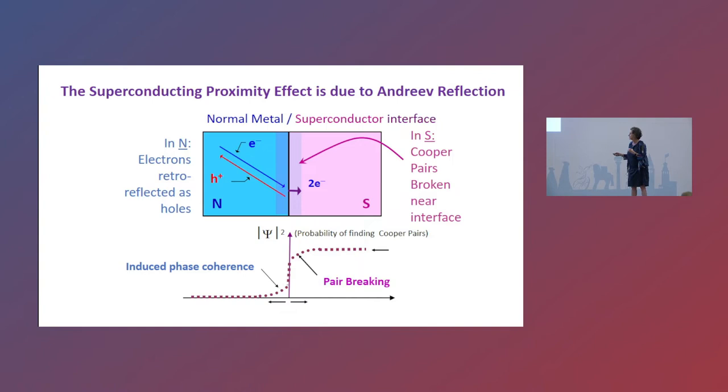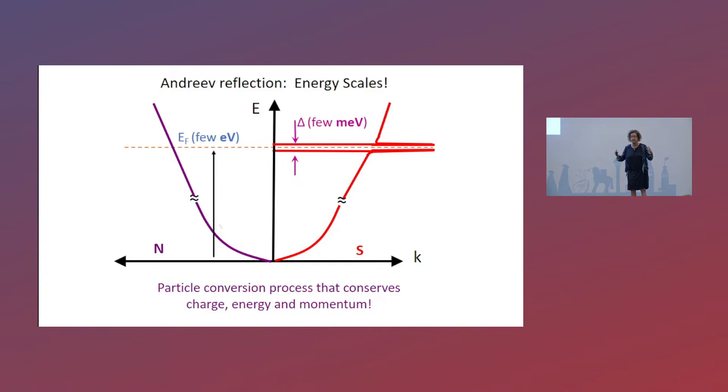If that sounds fantastic, this next slide shows that when you think of Andreev reflection, you have an electron coming in at the Fermi energy. The Fermi energy in simple metals is like volts - two volts, five volts depending on the metal. If you're looking at a superconducting gap, that's on the order of a few millivolts. So why would you have an electron that can't enter into a superconductor? The superconductor says no, you're going to retroreflect as a hole. Why? Because it's quantum mechanics.